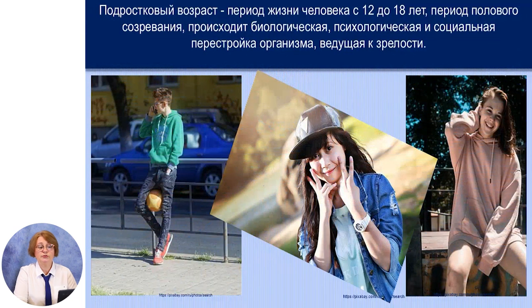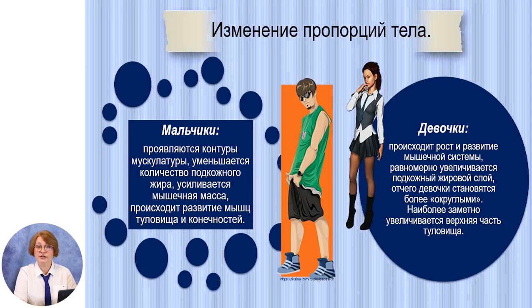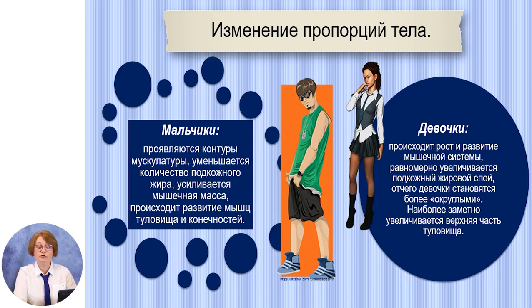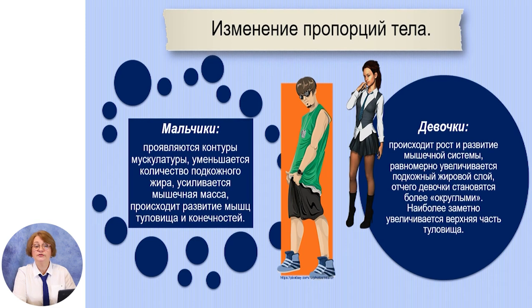Подростковый возраст – это период жизни человека с 12 до 18 лет, период полового созревания. Происходит биологическая, психологическая и социальная перестройка организма, которая ведёт к зрелости. В этот период меняются пропорции тела. У мальчиков появляются контуры мускулатуры, уменьшается количество подкожного жира, усиливается мышечная масса, происходит развитие мышц туловища и конечностей. У девочек тоже происходит рост и развитие мышечной системы, равномерно увеличивается подкожный жировой слой, отчего девочки становятся более округлыми.